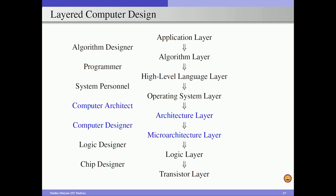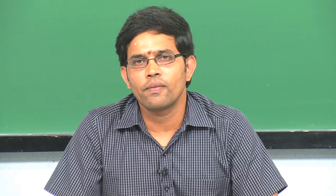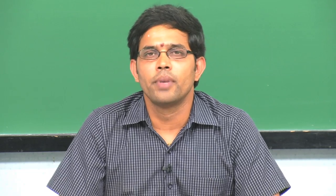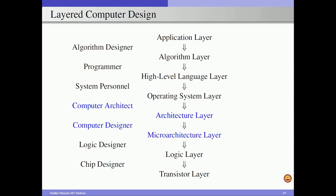Once the microarchitecture layer is defined, the next is the logic layer, which consists of digital circuits — both combinational and sequential. The components in the logic layer are flip-flops and gates, and using these we build digital circuits. The last layer is the transistor layer, which consists of transistors, resistors, and capacitors, used to build the gates. In this layered view of computer design, except for the application layer, each layer implements the layer above it — the transistor layer implements the logic layer, which implements the microarchitecture layer, which implements the architectural layer, and so on.